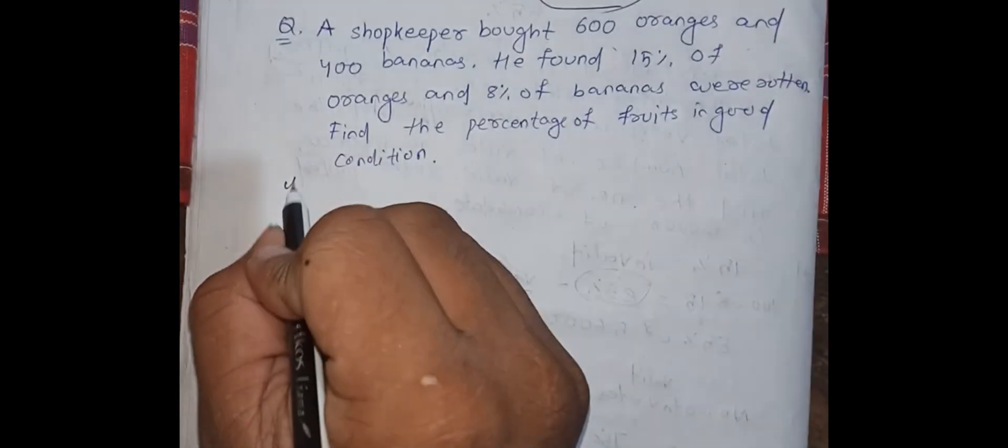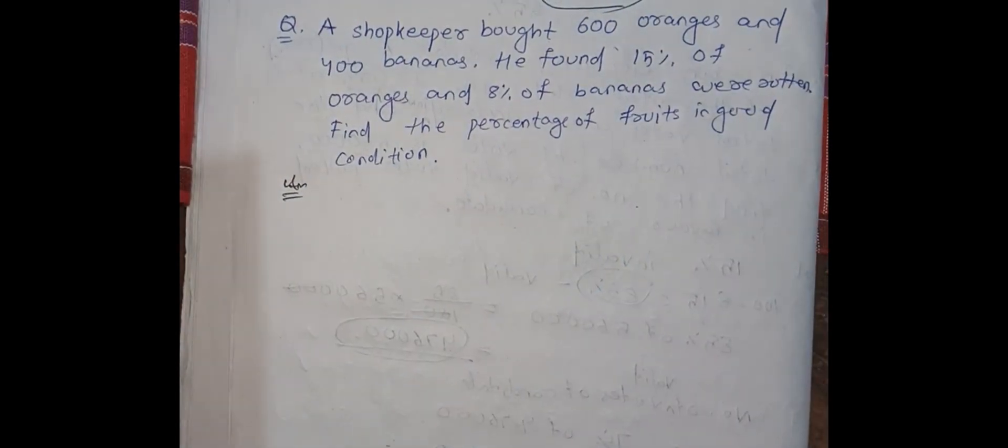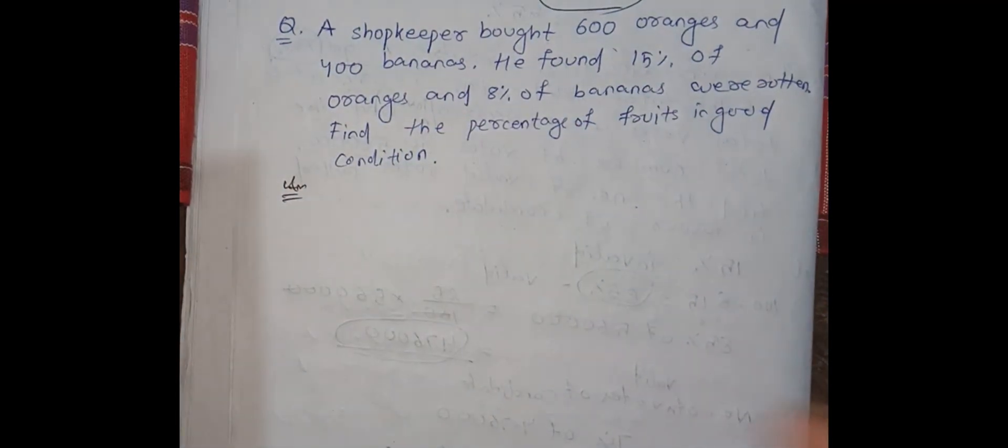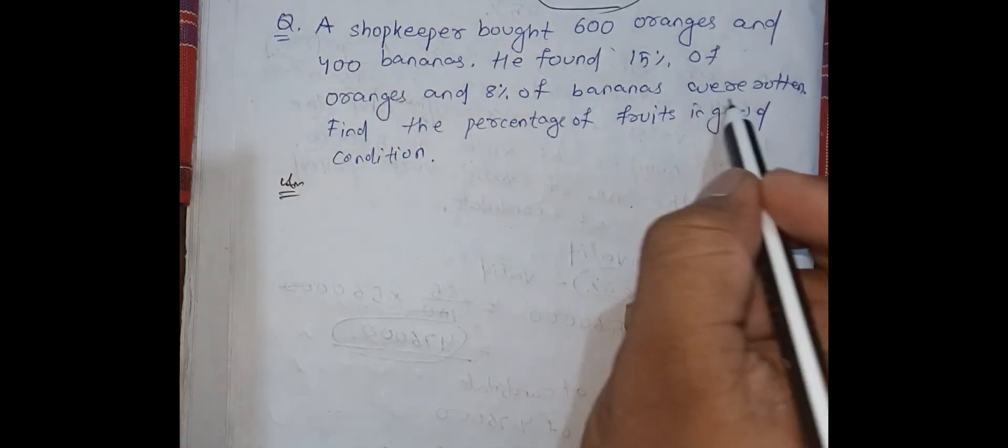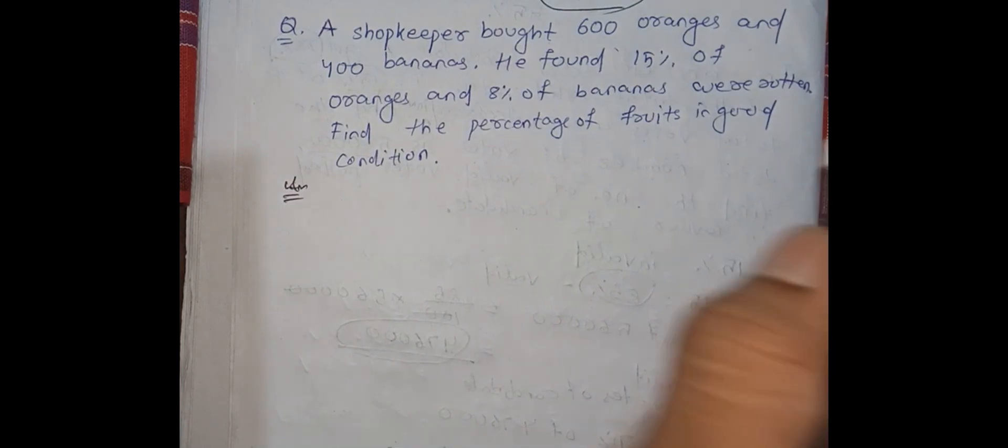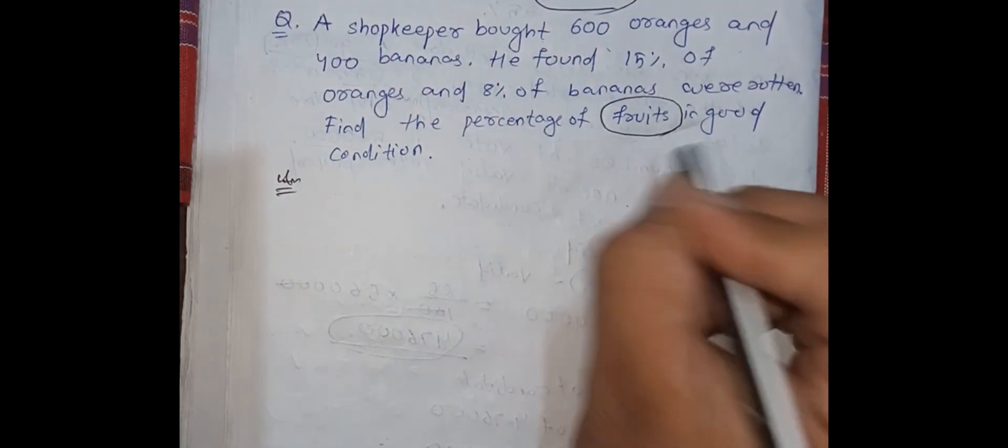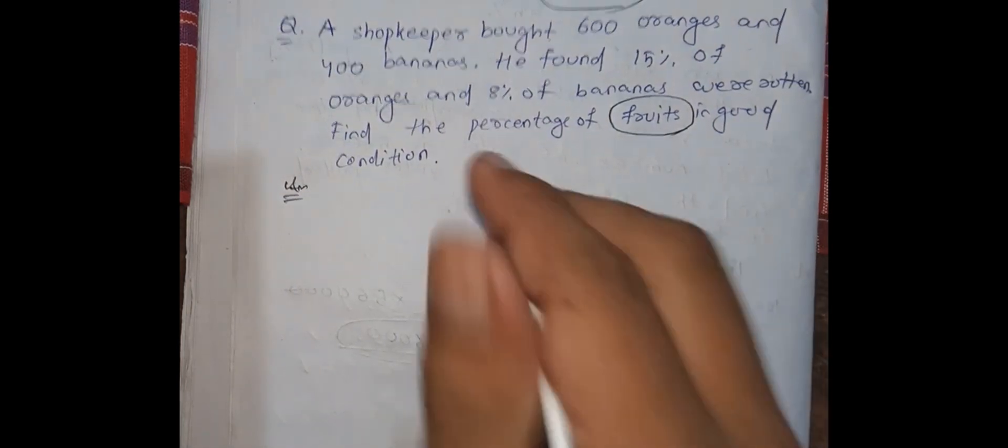Remember, here is where most people do it wrong. Here, they just see the question 15% of the oranges are rotten, so you might write in the exam that 85% of oranges and 92% of bananas were in good condition. See here, it is given for the fruit overall, in the total, not the individual. So here you have to find the percentage of the whole total.